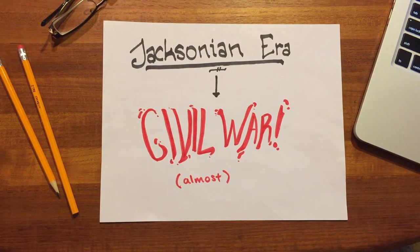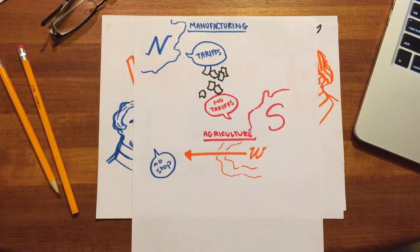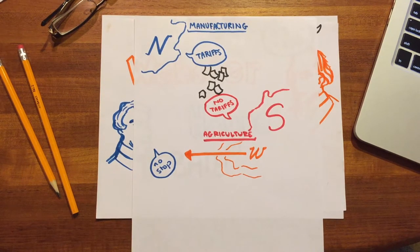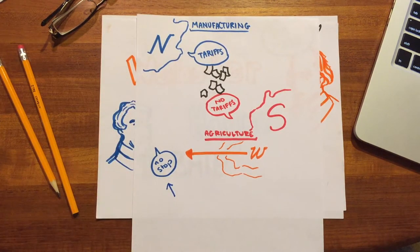The sectional tension of the period found a spectacular outlet in the Senate in 1829-1830 in the Webster-Hayne debate. The North was increasing levels of manufacturing while the South continued to provide raw materials. Because of this, the North supported protective tariffs while the South was against them. The North also resented westward expansion, and the South saw this as a northern attempt to stop the spread of agriculture. In 1829, a New England Senator introduced a resolution designed to curb the sale of western public lands, which flared a sectional argument within the Senate.